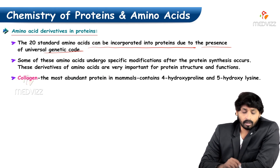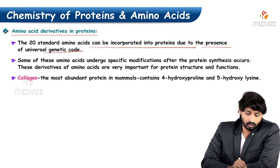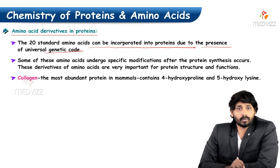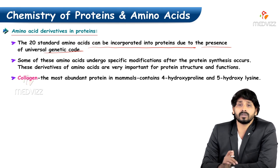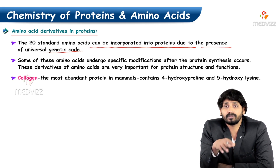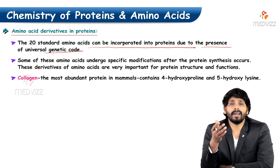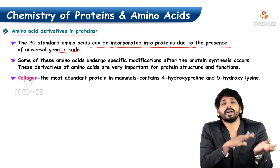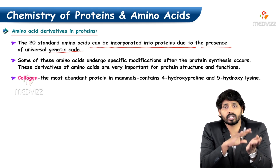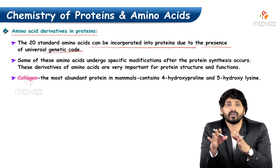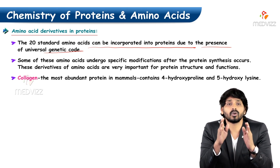These modified amino acids or amino acid derivatives are very important for protein structure and function. One such example is collagen, a protein and the most abundant protein in mammals, which contains 4-hydroxyproline and hydroxylysine. We do not have hydroxyproline or hydroxylysine among the 20 amino acids — we only have proline and lysine. This indicates that proline is hydroxylated to form hydroxyproline, and hydroxyl group is added to lysine to form 5-hydroxylysine. These are very important in the formation of functional collagen.